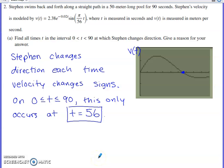This will be a discussion of problem number two from the 2023 AP Calc AB exam. It's a calculator question that presents you with a velocity function. The context is Stephen swims back and forth along a straight path in a 50-meter long pool for 90 seconds.